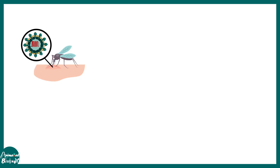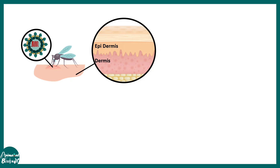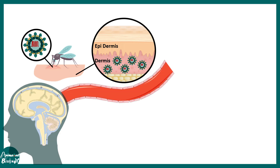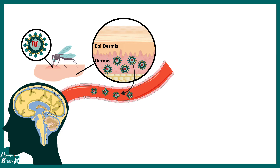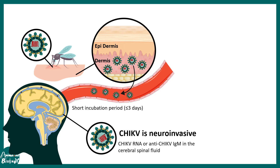This virus affects specific cells in the dermis region of the skin and can grow and increase in number in those cells. Eventually it can also move into the bloodstream, and when the level of viruses increases it will lead to viremia. It has also been seen that cerebrospinal fluid contains Chikungunya virus particles and RNA, meaning it is neurotropic and can affect the brain as well.